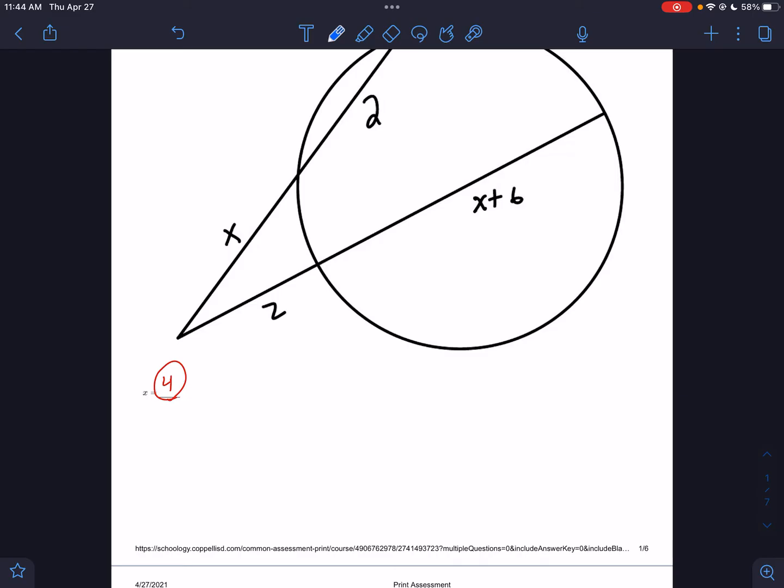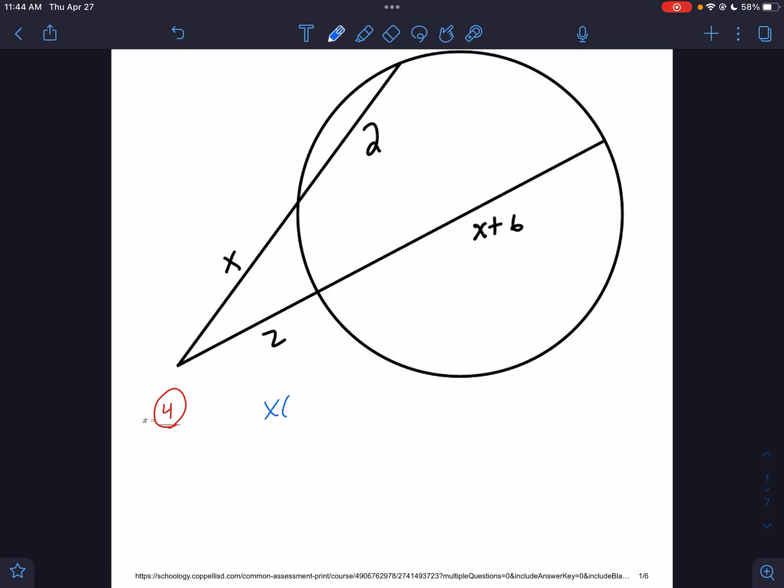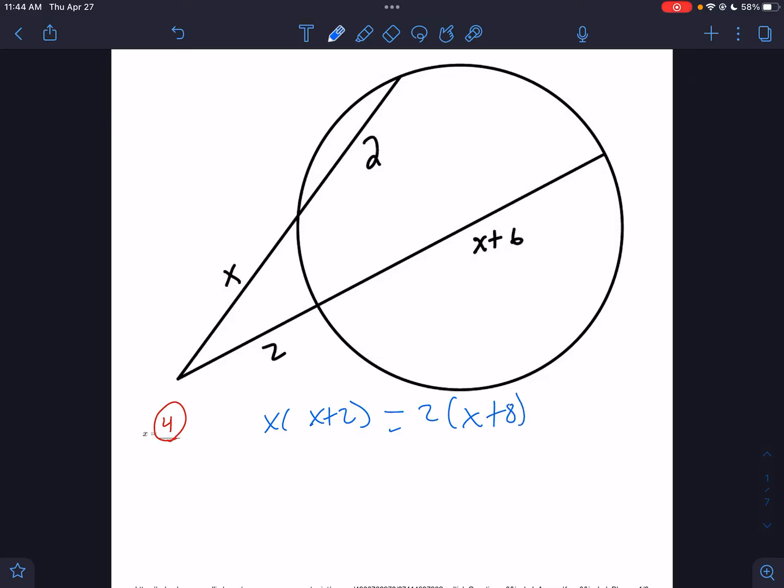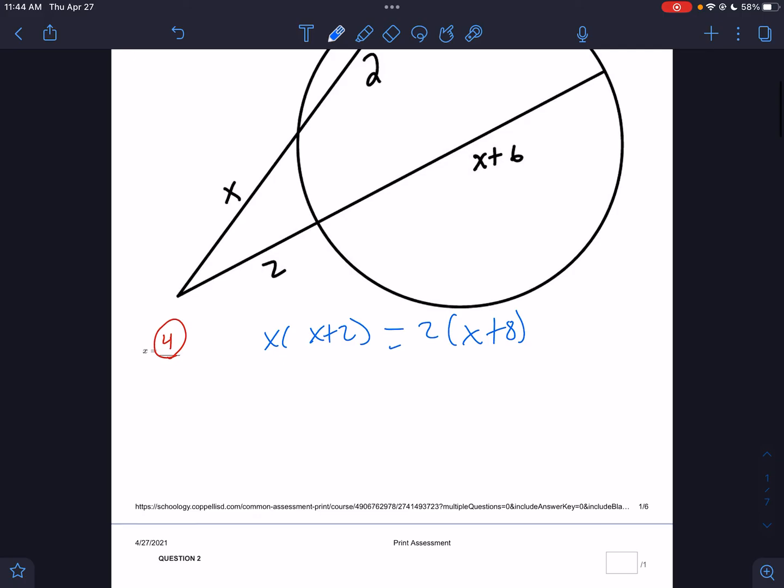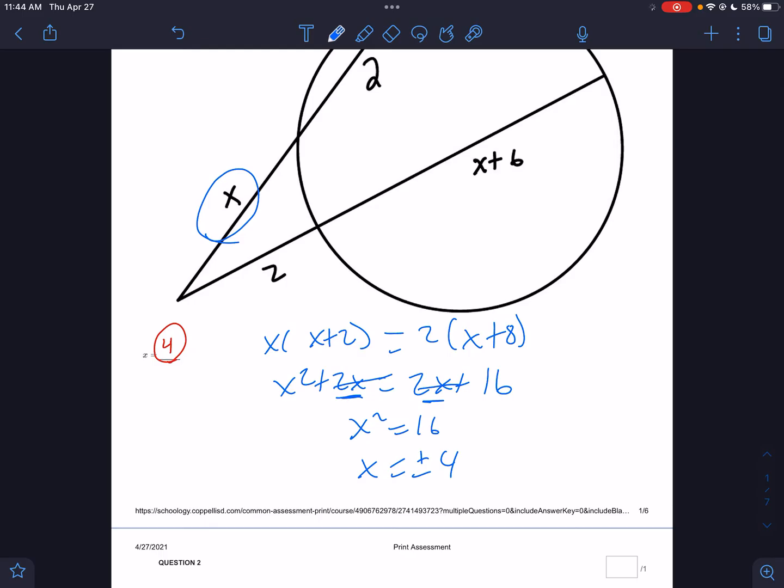The first situation is outside times total: x times (x + 2) equals outside times total. The total would be (x + 8). Make sure you combine like terms. That would be x² + 2x = 2x + 16. The 2x's cancel out, leaving you with x² = 16, so x equals plus or minus 4. But can you plug in negative 4? Not on this one, because x can't be negative. So negative 4 is out; positive 4 is the only one that works.